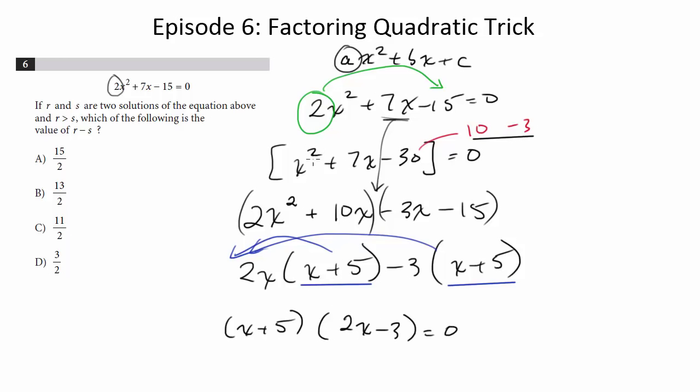Now, you might say this took a while. And yeah, it did. But it's a guaranteed way to factor any of these questions when a is not 1. You might be able to do it straightforward. You might have been able to figure out it's going to be 2x minus 3 and x plus 5. That's fine. But this is a guaranteed way to do it if you don't.